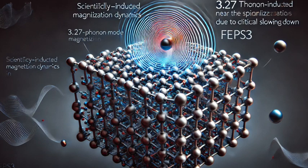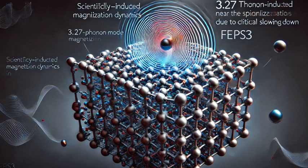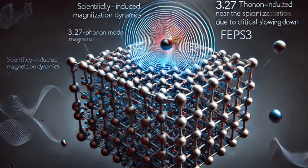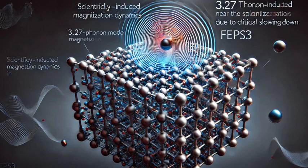Let's start with something we all use every day: data storage. Our computers, our phones, the cloud—it all relies on storing vast amounts of information, and that storage is only going to become more important as we generate more and more data. Right. But the way we store data now has limitations. Think about those tiny magnetic hard drives in our computers. They store information by physically flipping tiny magnetic domains, but that process is getting harder and harder to speed up and to miniaturize. We're hitting a wall.